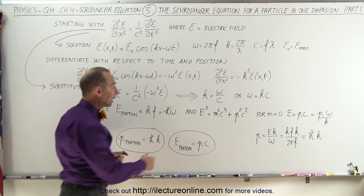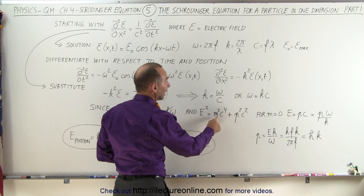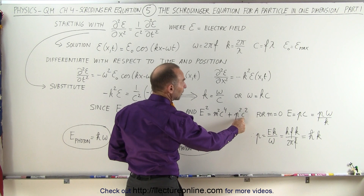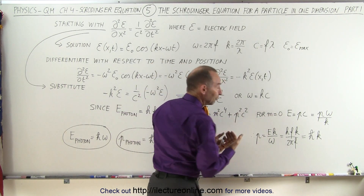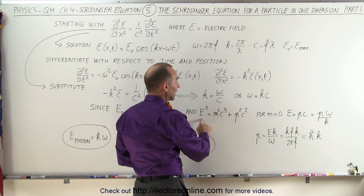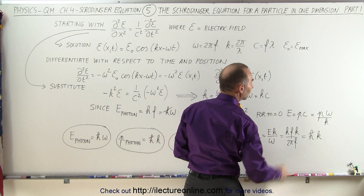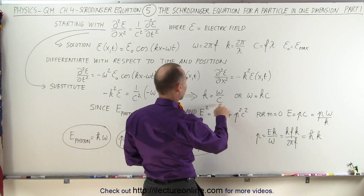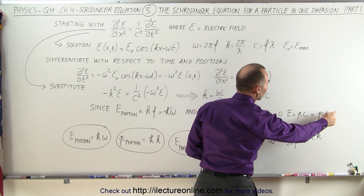Remembering that the total energy of a particle with mass squared equals (mc²)² plus (pc)², for a particle like a photon that does not have mass, the mass term is eliminated. We can then write that the energy of a photon is simply the momentum of the photon times the speed of light. The speed of light here can be written as ω over k, so the energy equals momentum times ω over k.